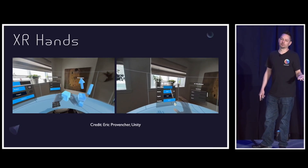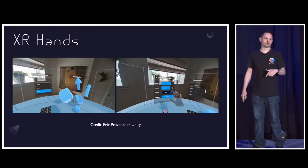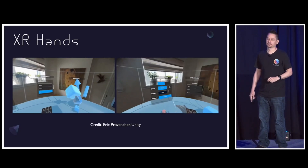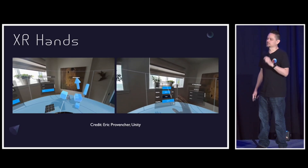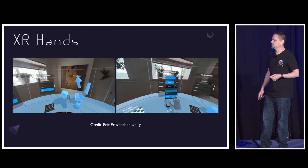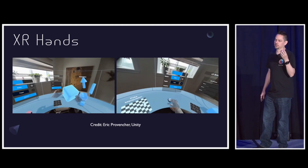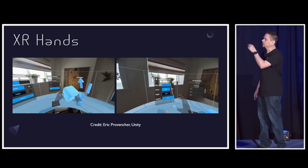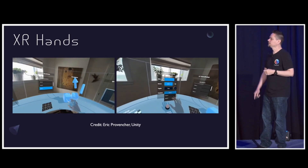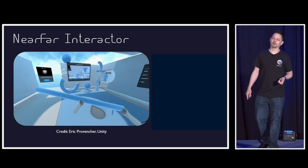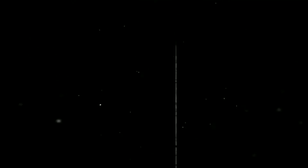Probably one of the most important things for writing portable code across devices is the XR Hands package. This is something developed with Microsoft back in the HoloLens 2 days, and it allows you to interact with objects using your hands — pick them up, throw them, use poke interactors, and all those sorts of things. The good news is that XRI has been completely refactored in version 3.0 to support this correctly. Click here for the next part in this series.